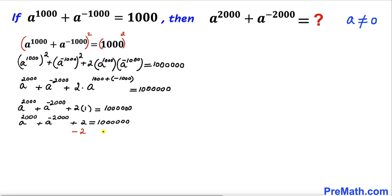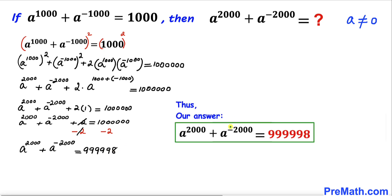Now let's subtract 2 from both sides. The +2 and −2 cancel, so we end up with a^2000 + a^(-2000) = 999,999,998. That's our final answer. Thanks for watching, and please don't forget to subscribe to my channel for more exciting videos. Bye!